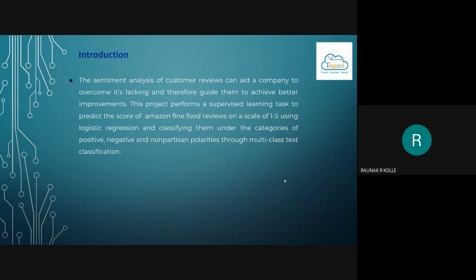This project work performs supervised learning tasks to predict the score of Amazon fine food reviews on a scale of 1 to 5 using logistic regression and classifies them under the categories of positive, negative, and non-partisan polarities through multi-class text classification.